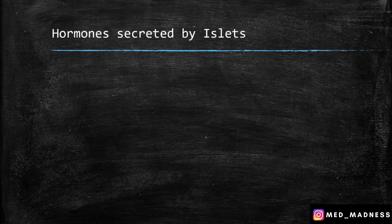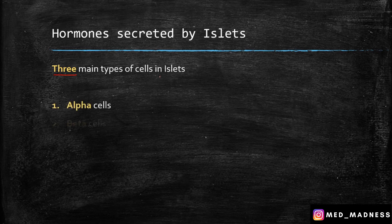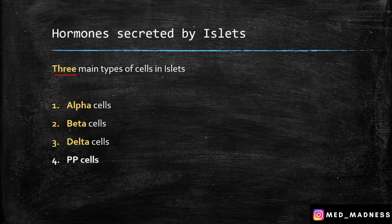What are all the hormones secreted by the islets of Langerhans? There are three main types of cells in the islets. One is the alpha, number two is the beta, and number three is the delta cells. There is one more type of cell but the function of it is very poorly understood — it is called PP cells.